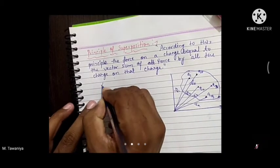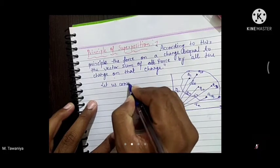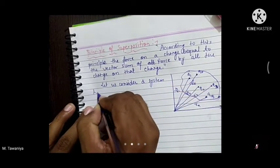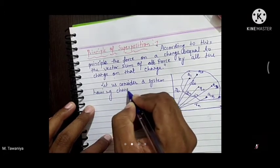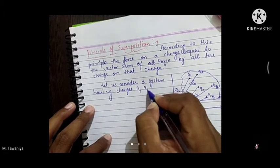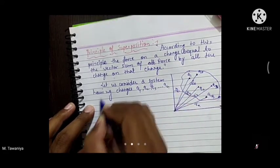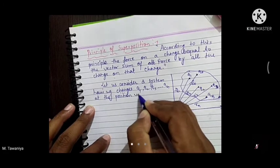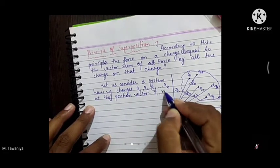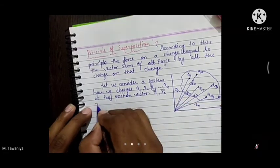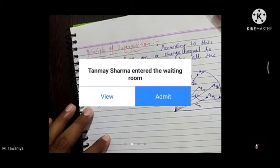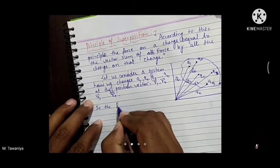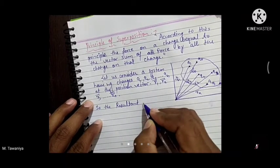Let us consider a system having charges q1, q2, q3... qn at position vectors r1 vector, r2 vector, r3 vector... rn vector. So the resultant force F vector is equal to...